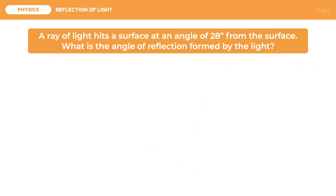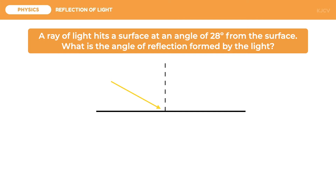For the second problem, a ray of light hits a surface at an angle of 28 degrees from the surface. What is the angle of reflection formed by the light? Again, it is better to draw the problem first, so we have the reflective surface and the normal line, and then draw the light rays even if we do not follow the accurate angle measurements.